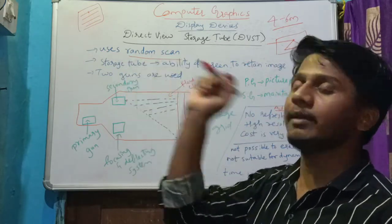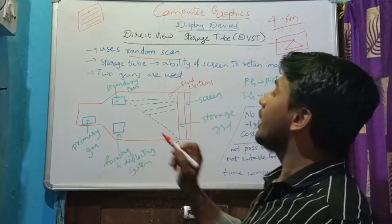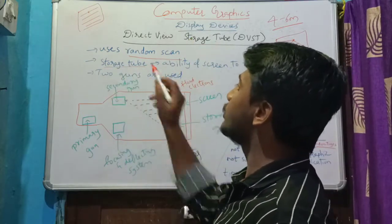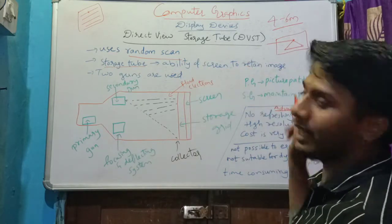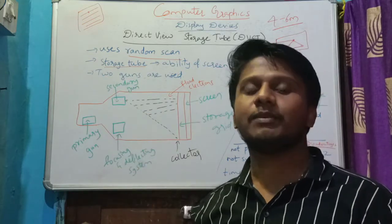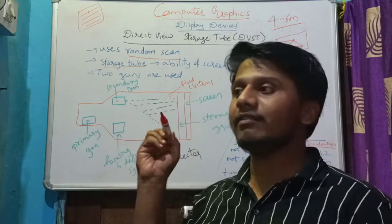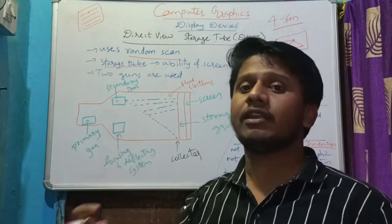Then the term storage tube refers to the ability of the screen to retain the image. In case of raster scan display or random scan display CRTs, once the image is produced, that is not permanent. It will lose the focus.